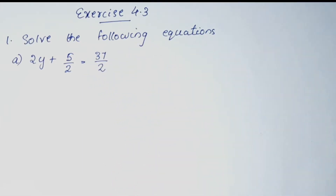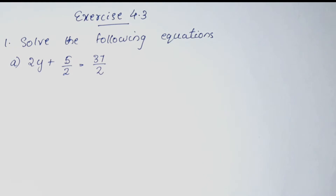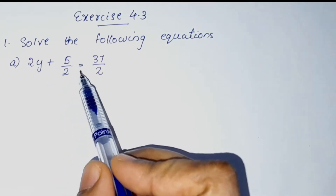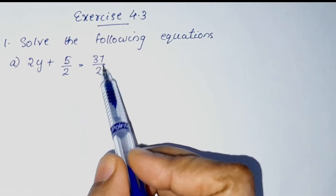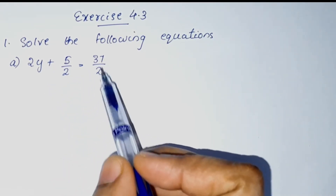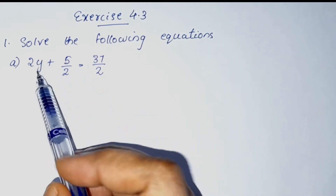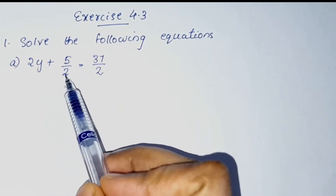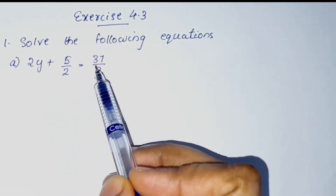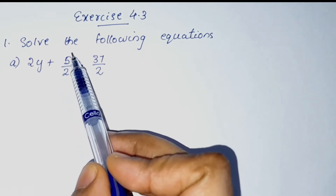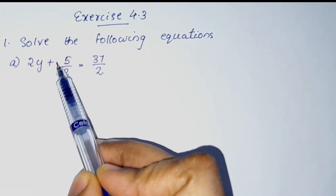We will do the first question of Exercise 4.3. We will solve the following equations. The equation is 2y plus 5 by 2 is equal to 37 by 2. We will transpose the same way as I am going to tell you. We will transpose the variable. Here the variable term remains, so we transpose 5 by 2.